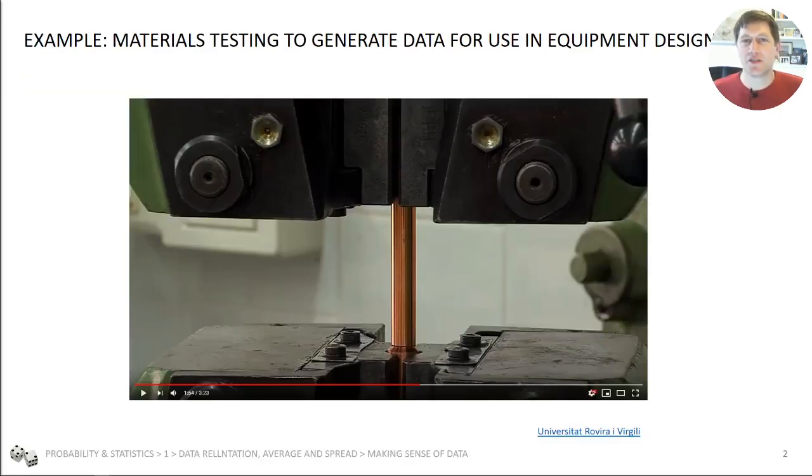Here's an experiment. This experiment is to measure the strength of metal. Here's our metal sample piece and it's going to be pulled between these two clamps.